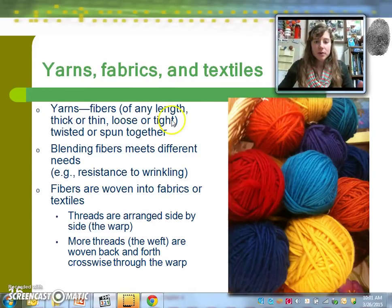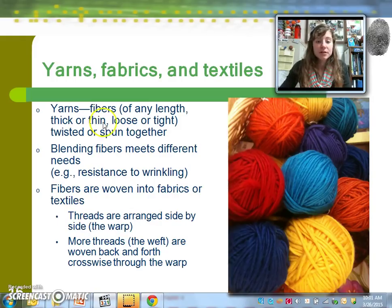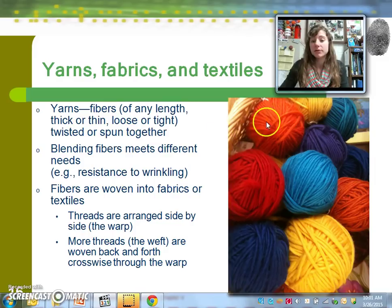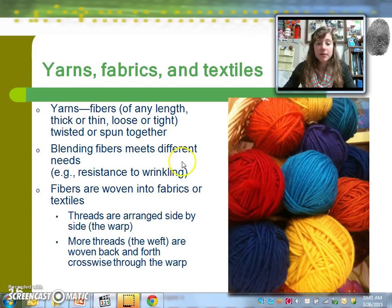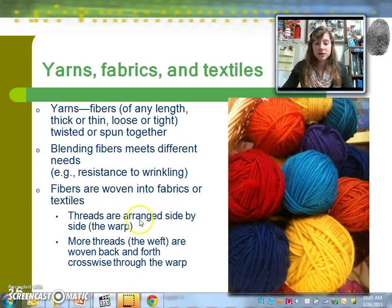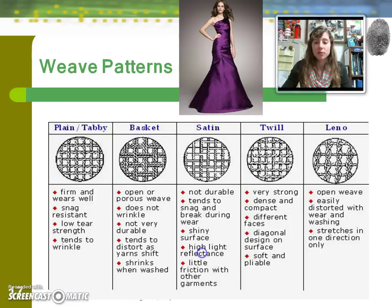Looking at this from a broad perspective, yarns can include fibers of possibly different materials that have been spun together. You can also blend different fibers to get different characteristics in the clothing. Fibers are woven into fabrics in different ways — the threads arranged side by side are the warp, and then other threads, the weft, are woven back and forth crosswise against the warp.